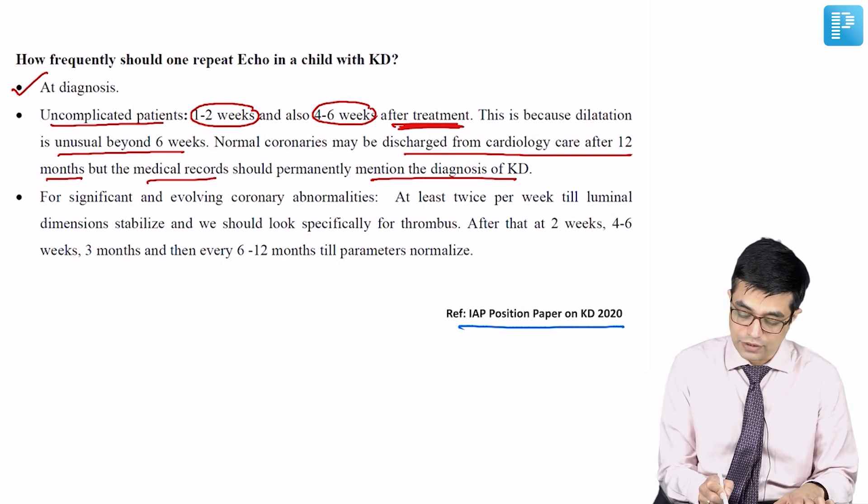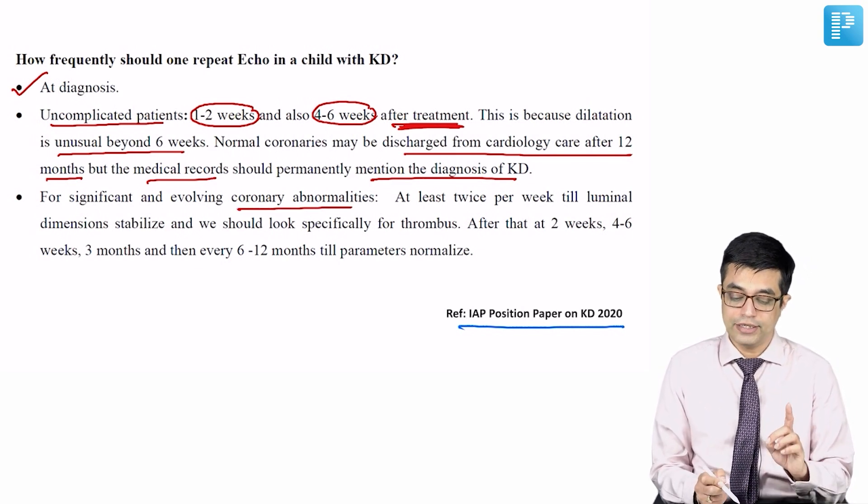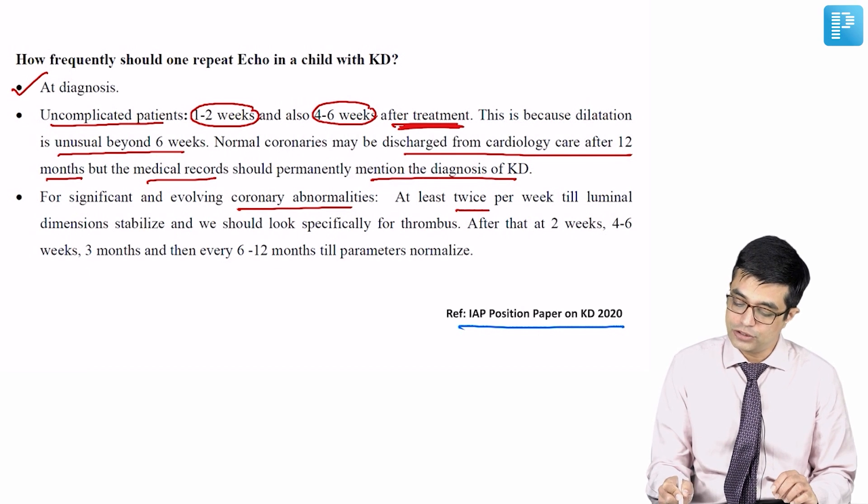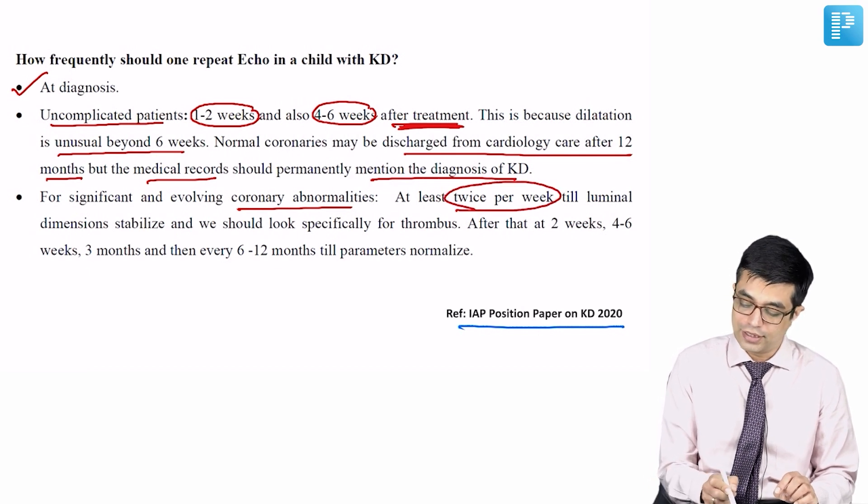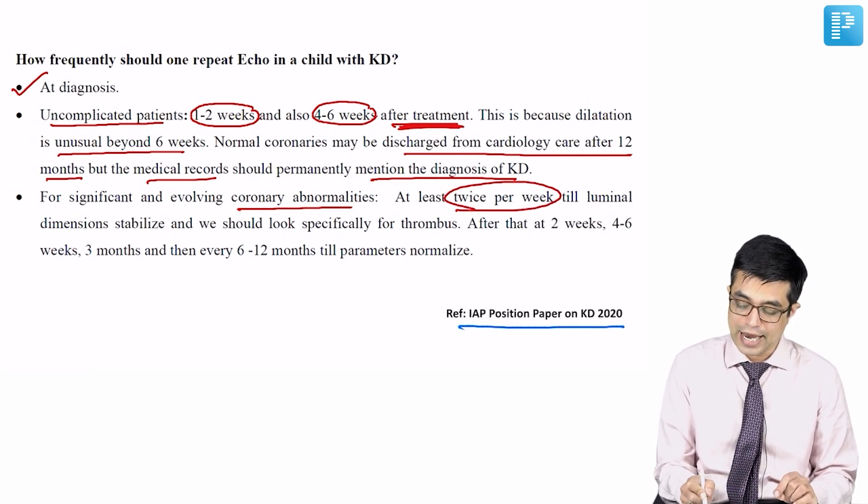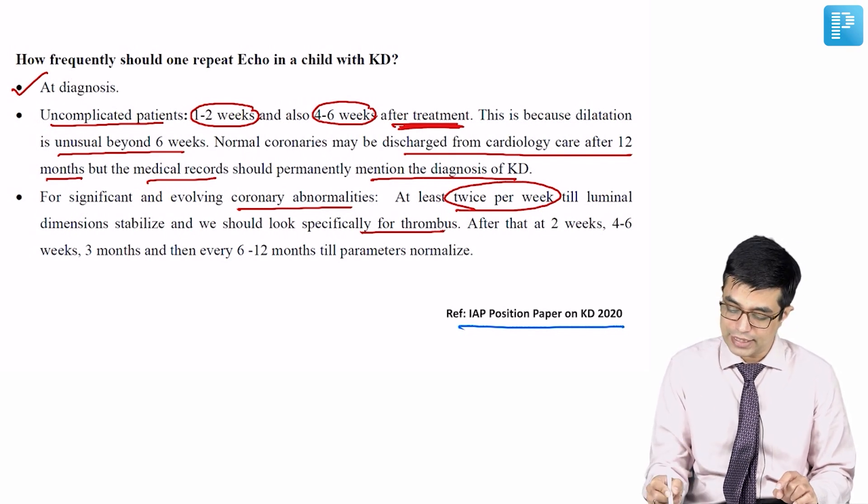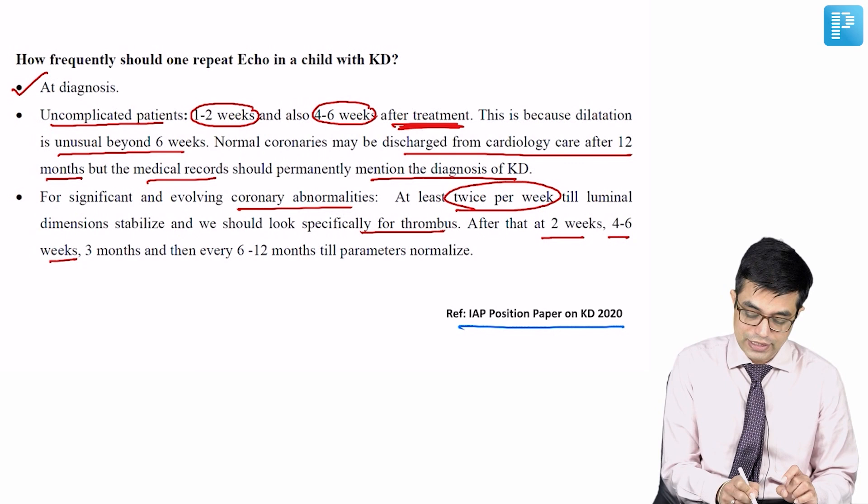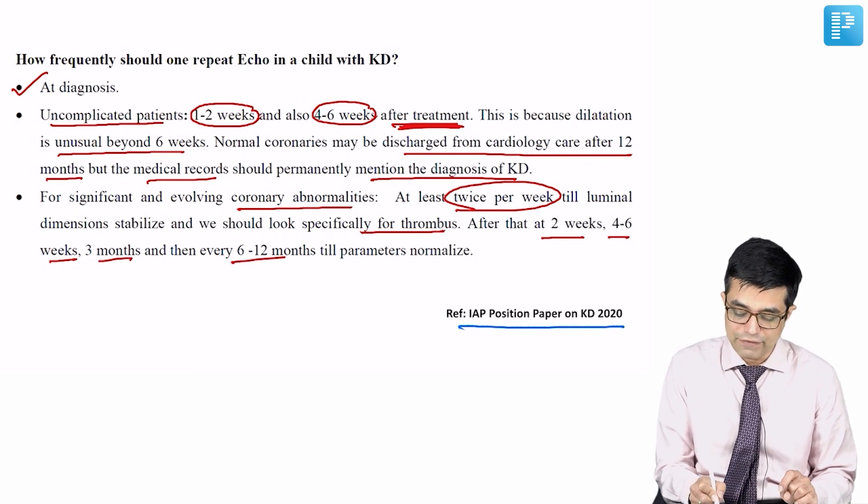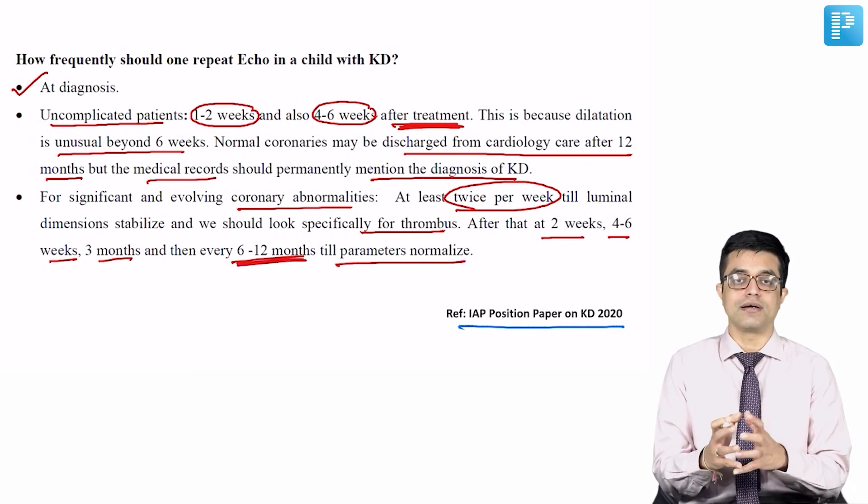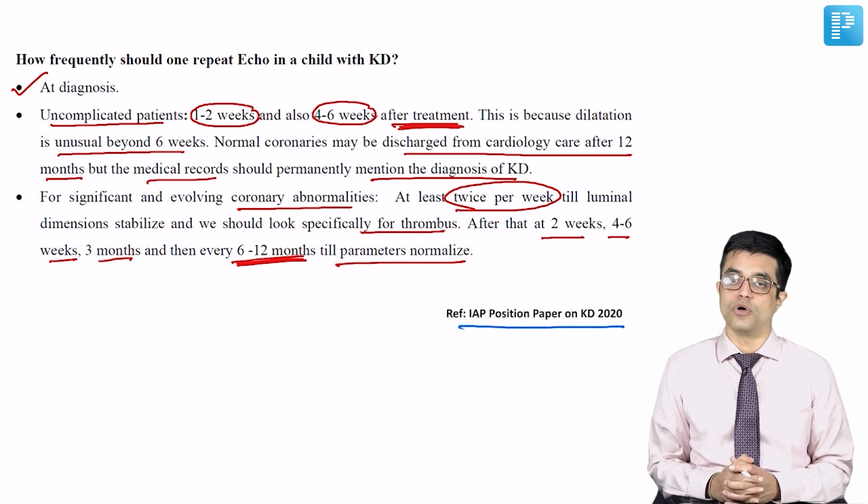For patients who have coronary abnormalities, ecocardiography should be done at least twice per week till the luminal dimensions stabilize and we should look for thrombus. After that, it should be done at 2 weeks, then 4 to 6 weeks, then at 3 months and then every 6 to 12 months till the ecocardiographic parameters normalize.